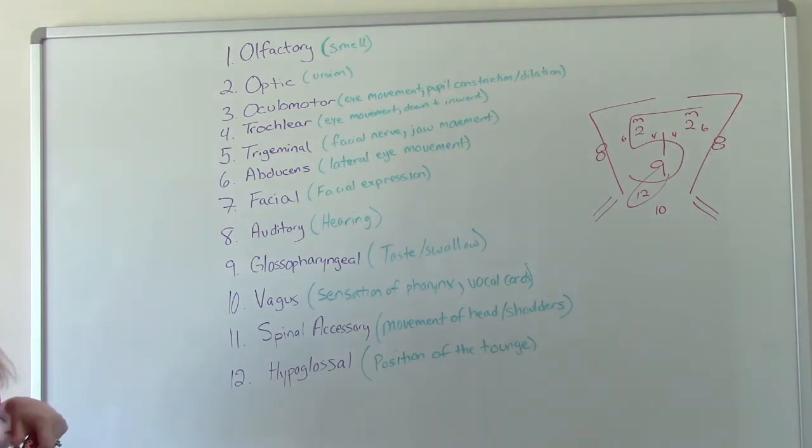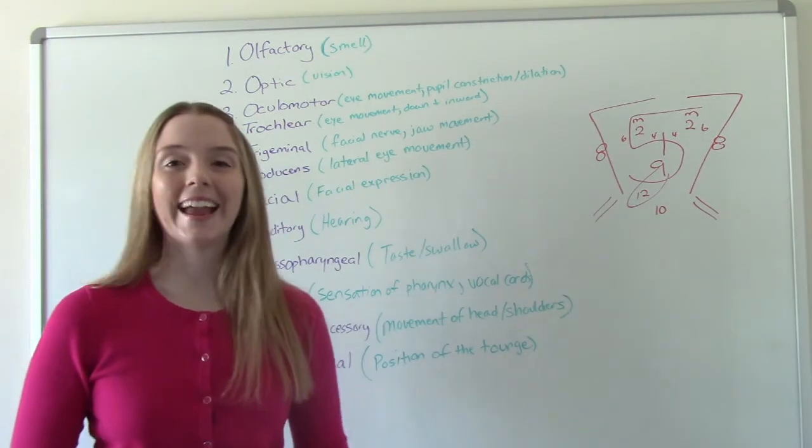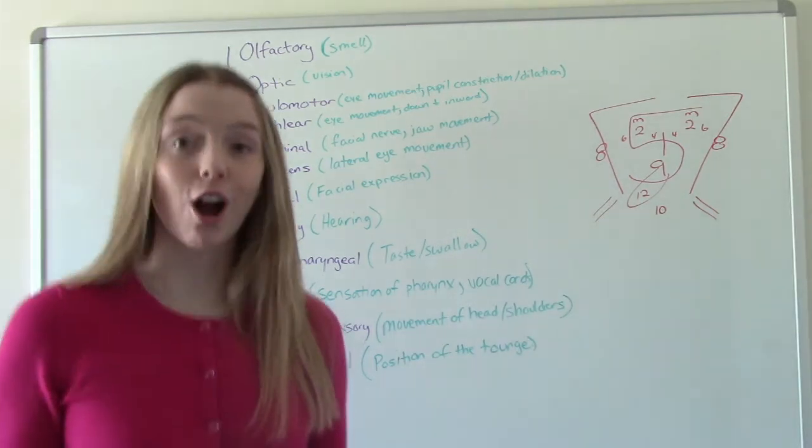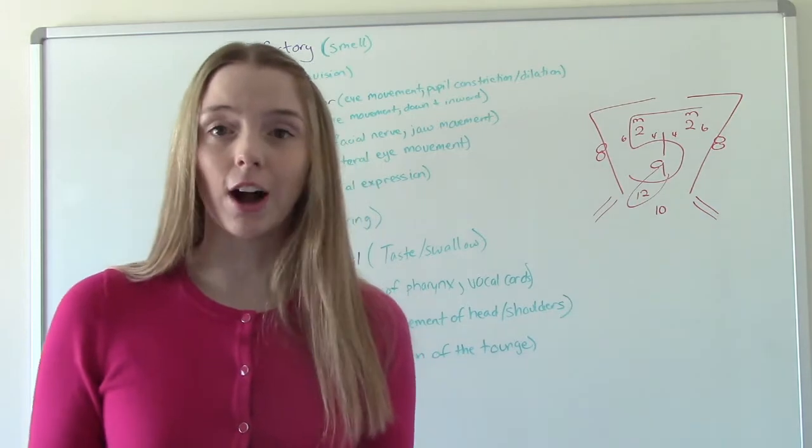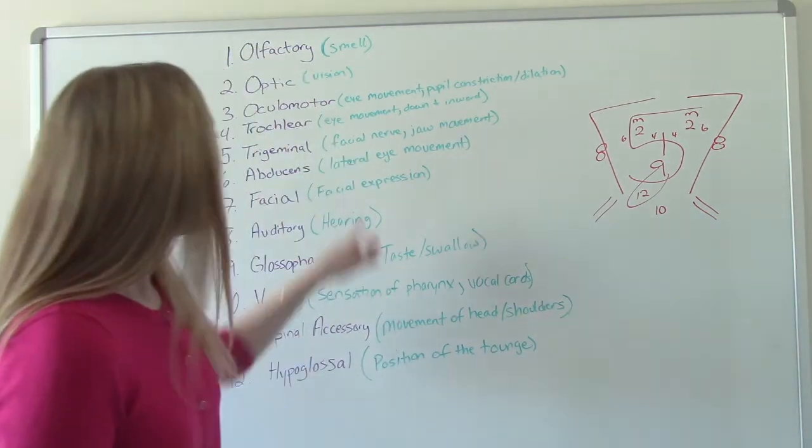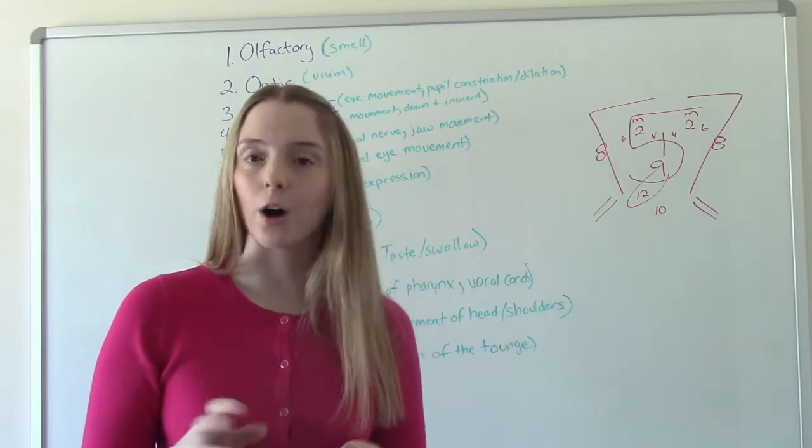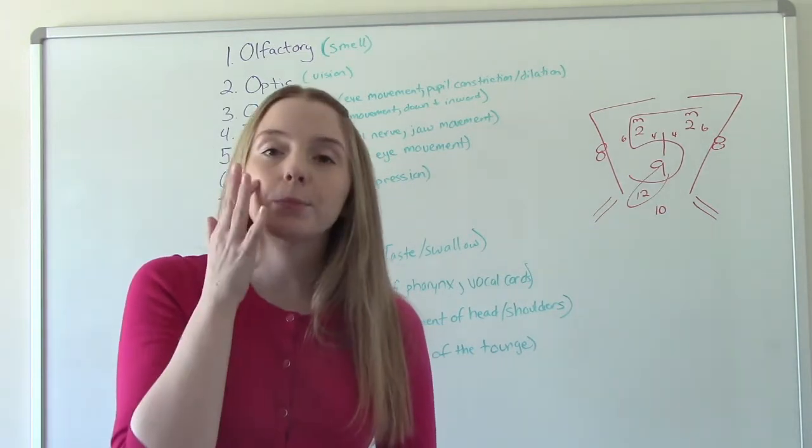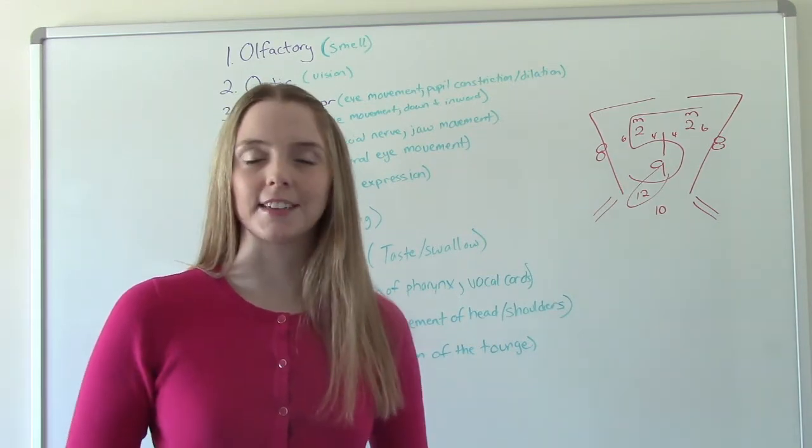Number five is our trigeminal. So this is our facial nerve and our jaw movement. So can they move their jaw? If they're talking to you and they're speaking normally, they're probably moving their jaw. So that's a good sign. And then facial nerve, take something nice and soft, like a little cotton ball or something like that, and gently brush it on their cheek. If they can feel that sensation, they got number five intact.